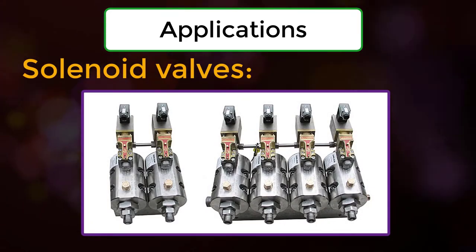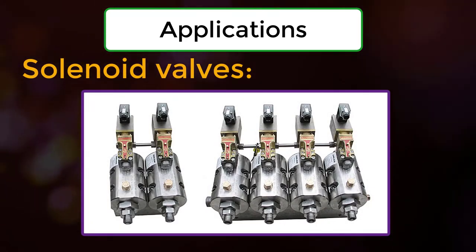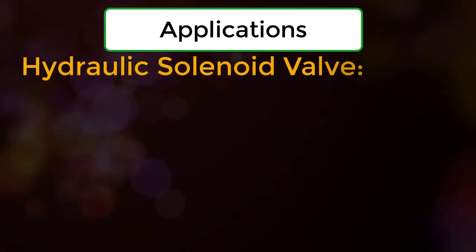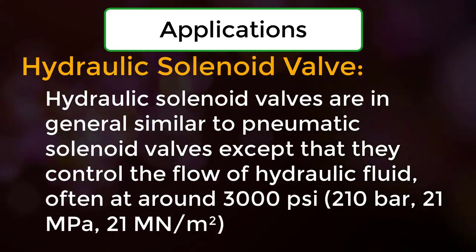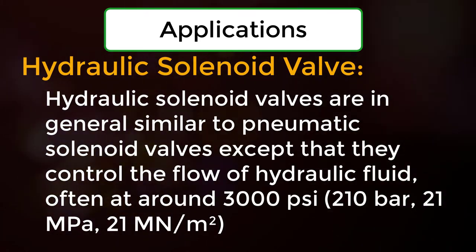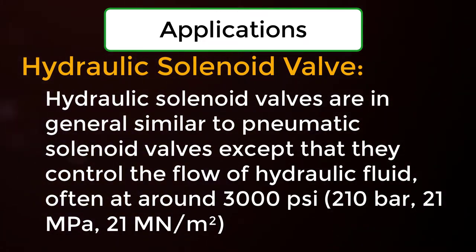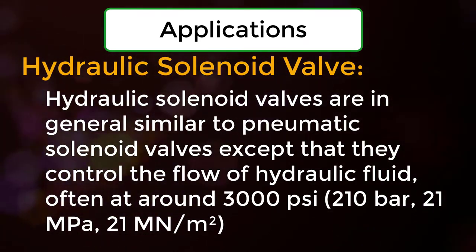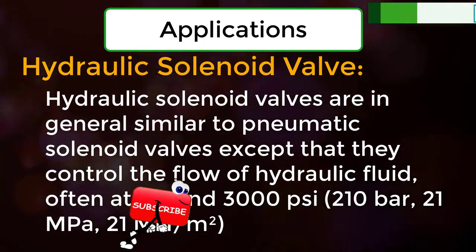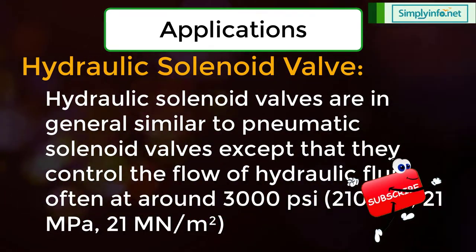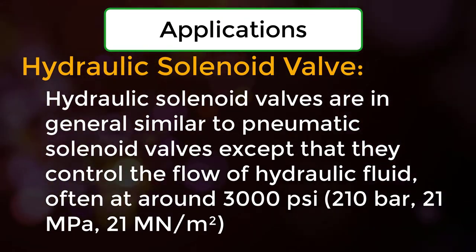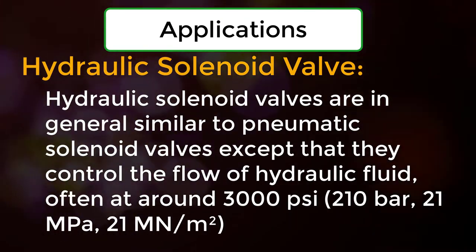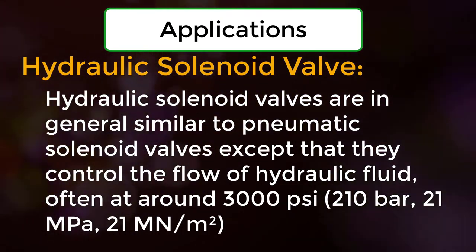Solenoid valves. Hydraulic solenoid valves are in general similar to pneumatic solenoid valves except that they control the flow of hydraulic fluids like oil, often at around 300 psi (210 bar, 21 MPa, 21 MN per m²).